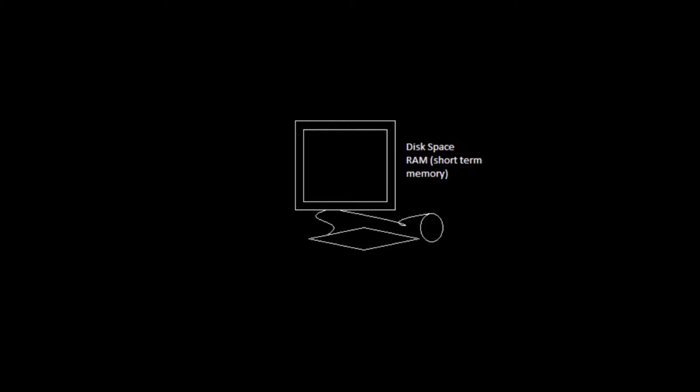A computer has different things, like a monitor, a keyboard, a mouse, disk space, and RAM. But the most important part of a computer is its operating system, or OS. This OS is what brings together all the other parts — it's what makes all the things work together.